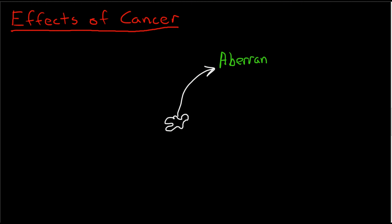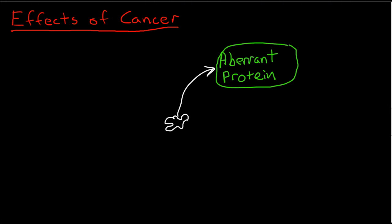Remember, we're going to talk about this in a little bit more detail. Cancer is a genetic disease, and what do genes do? They code for functional proteins in the body. So if you have a disease that is due to genetic mutations, you are going to end up with aberrant proteins, and these aberrant proteins can cause all sorts of problems.